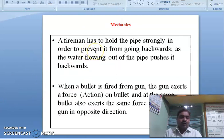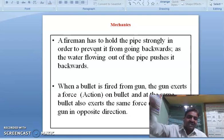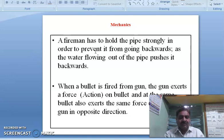A fireman has to hold the pipe, fire brigade office you know. So the fireman has to hold the pipe strongly in order to prevent it from going backwards. As the water flowing out of the pipe pushes it back. Water flows in this direction, pipe goes in this direction, both are in opposite. So the fireman has to hold the pipe strong.